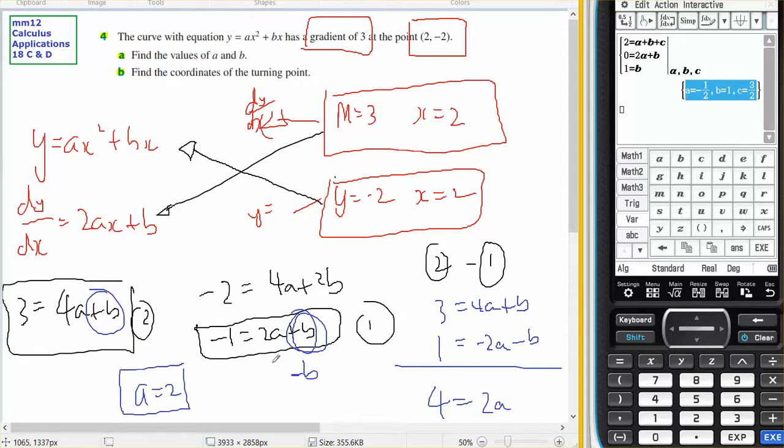And if A equals 2, B will equal minus 1 minus 2A. Minus 1 minus 4, minus 5 should be what B equals.